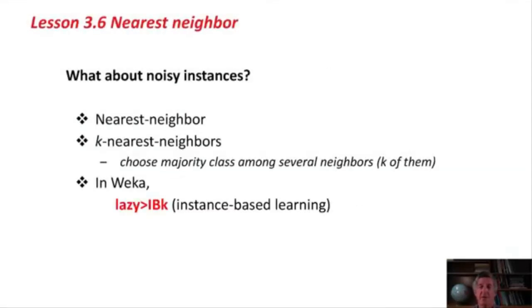What about noisy instances? If we have a noisy data set, then by accident we might find an incorrectly classified training instance as the nearest one to our test instance. You can guard against that by using k nearest neighbors, say 3. k might be 3 or 5. You look for the 3 or the 5 nearest neighbors and choose the majority class amongst those when classifying an unknown point. That's the k-nearest-neighbor method.